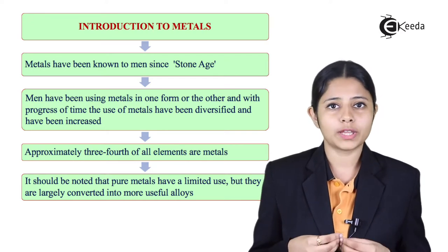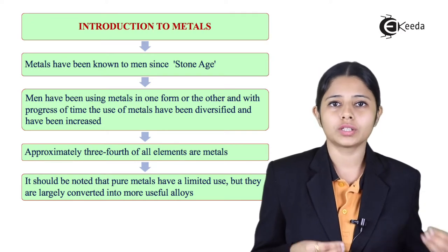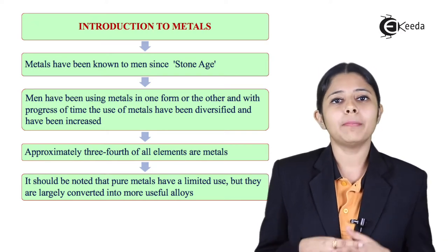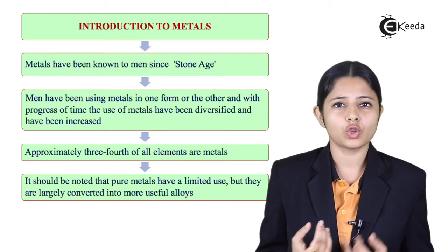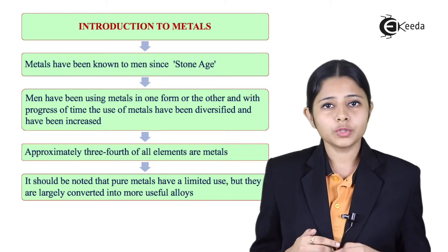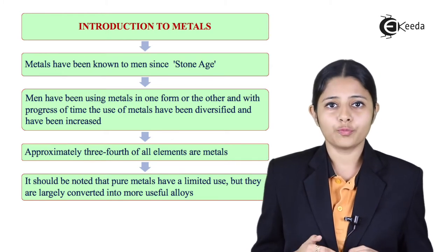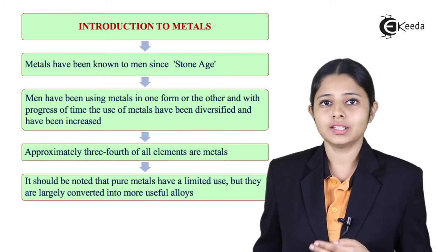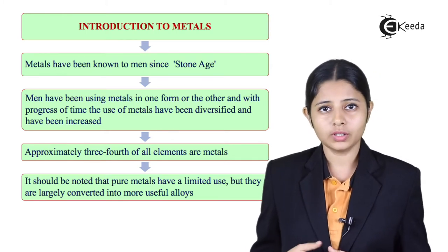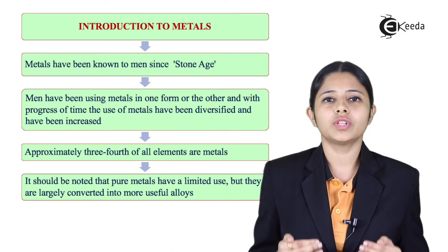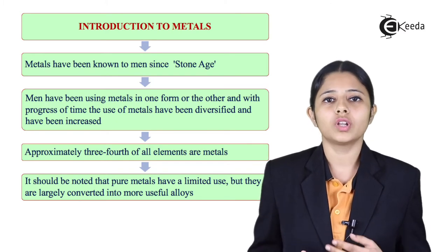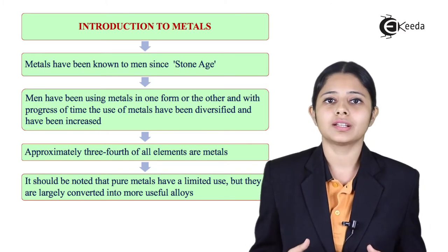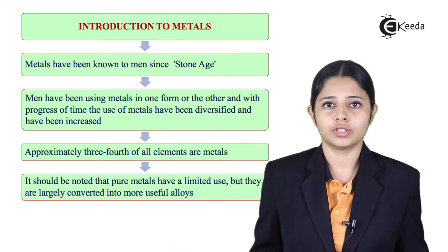Metals have been used by humans for a long time, but metals in their natural form are very soft. We will cover the properties of metals later in this chapter. Most metals today are being alloyed, and it is in the form of alloys that many metals are used.